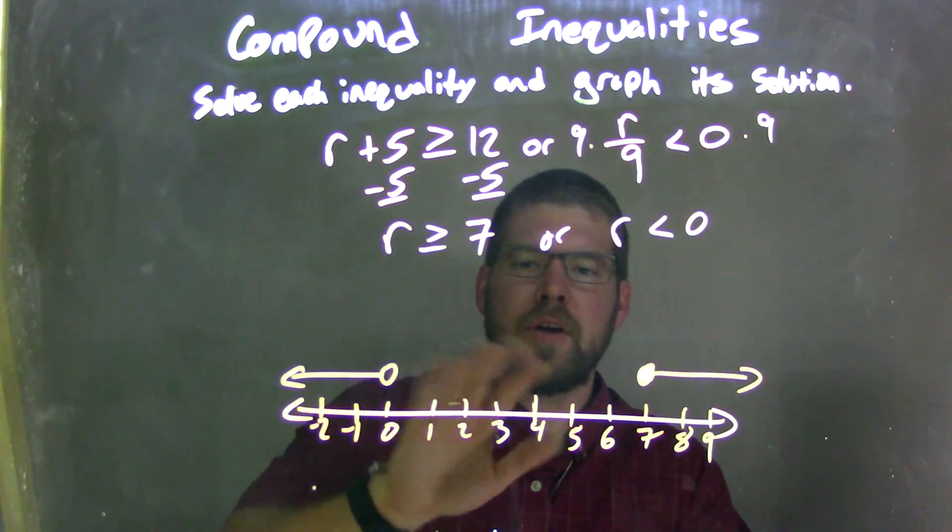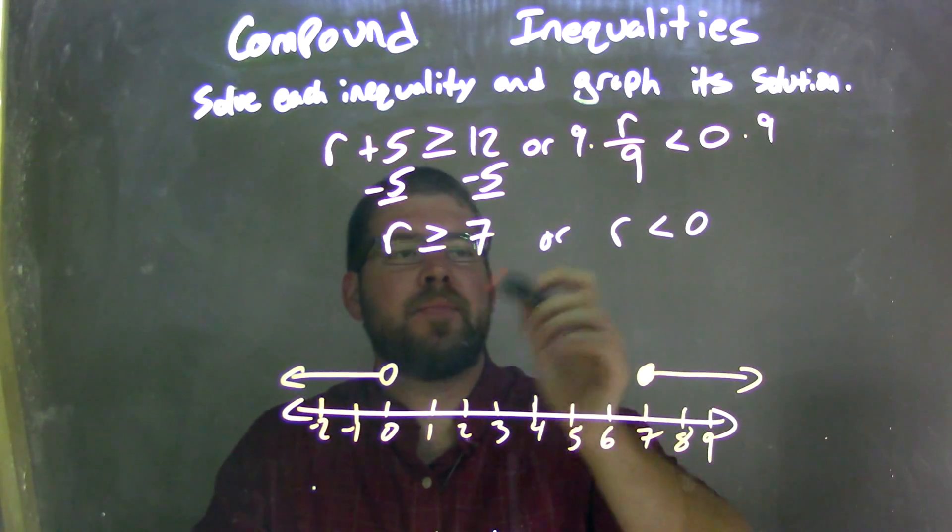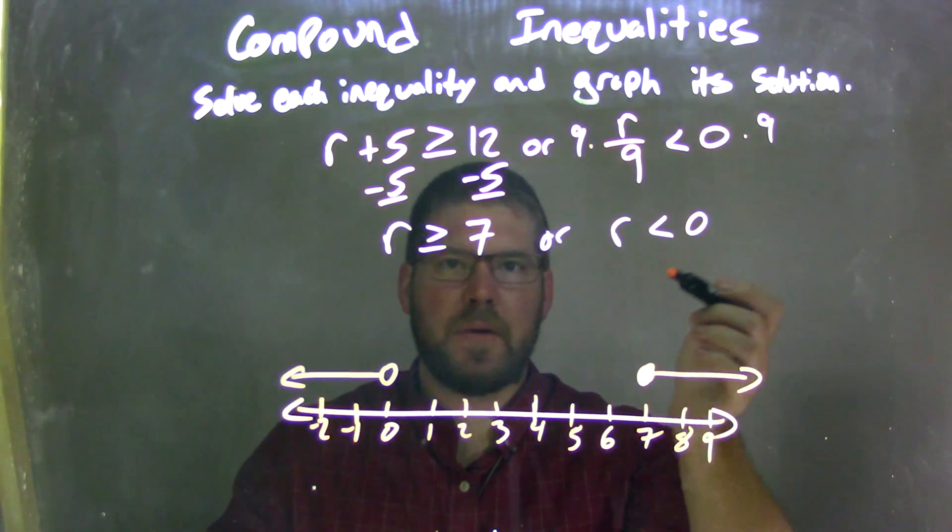And there we have it. We have our graph here that represents our compound inequality, which is r is greater than or equal to 7, or r is less than 0.